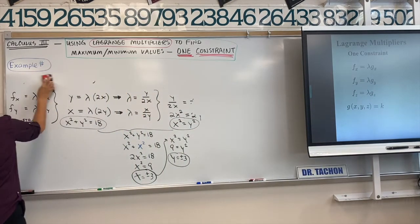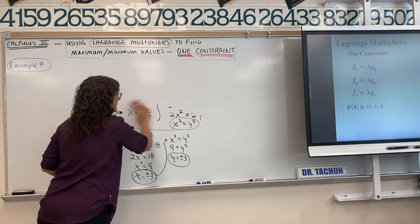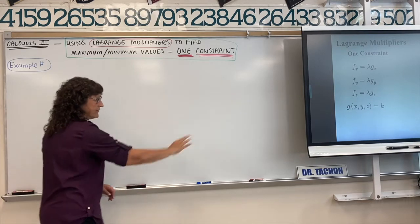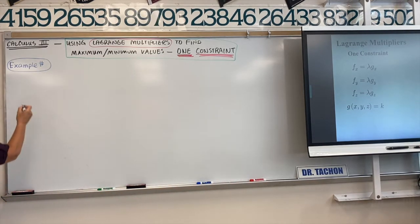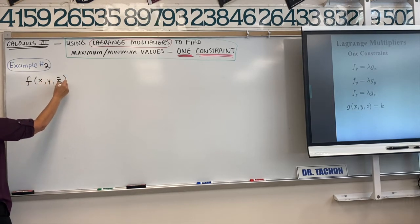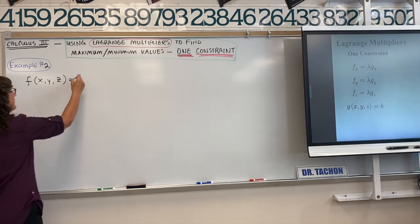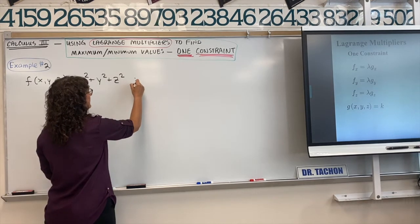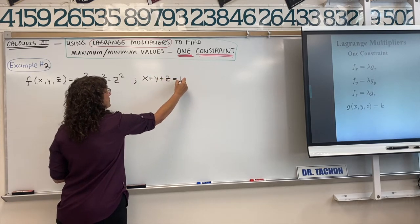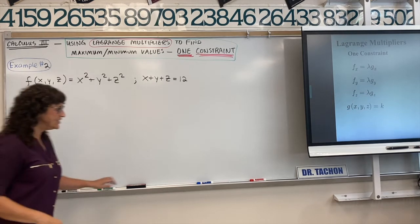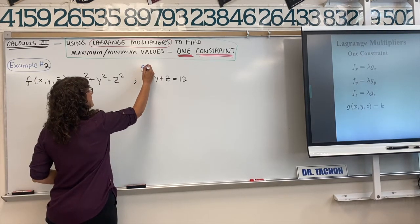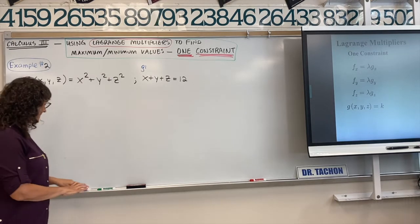Example 2: our multivariate function of three variables is f(x, y, z) = x squared plus y squared plus z squared, and our constraint is x plus y plus z equals 12.